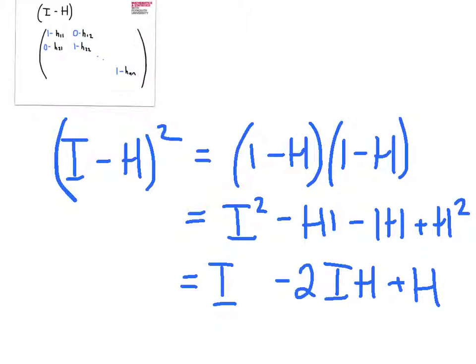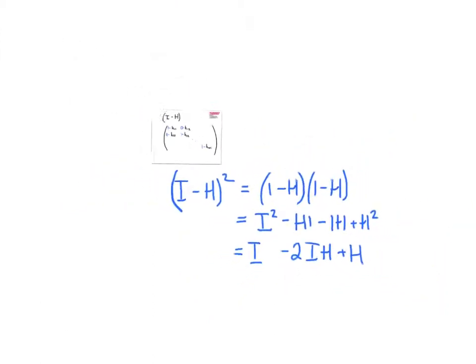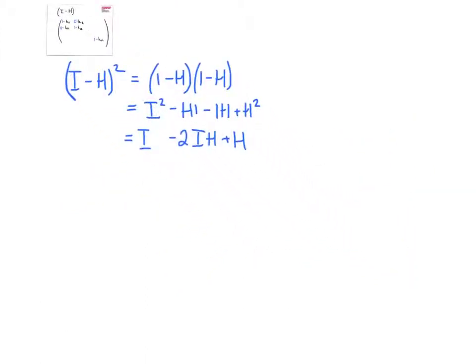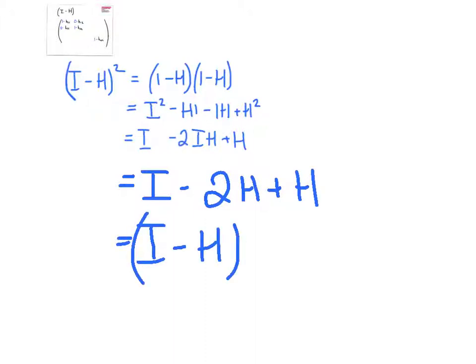And then of course I can reduce this because we know that the identity matrix multiplied by a hat matrix is a hat matrix. So I have I minus 2H plus H, so in other words, I get back to identity minus the hat matrix. So I have another symmetric and idempotent matrix.